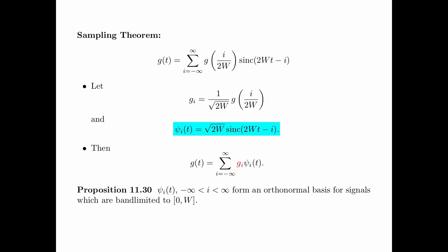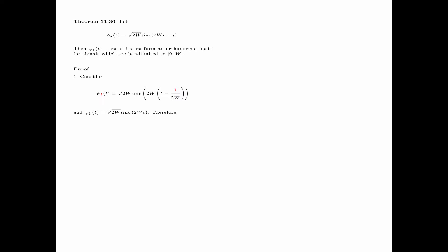Proposition 11.30 says that psi_i of t, for i from minus infinity to infinity, form an orthonormal basis for signals which are band-limited to the interval from 0 to w. Here is the proof. Consider psi_i of t equals square root of 2w sinc of 2w times t minus i over 2w. Setting i equals 0, we obtain psi_0 of t equals square root of 2w times sinc of 2wt. So psi_i of t is obtained from psi_0 of t by replacing t by t minus i over 2w — that is, psi_i of t equals psi_0 of t minus i over 2w, meaning they are translations of each other and have the same energy.